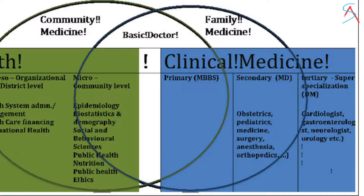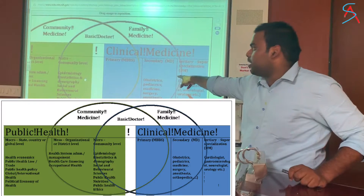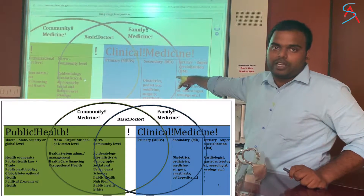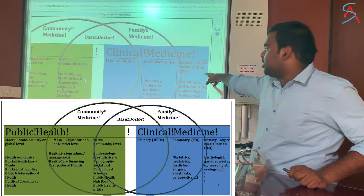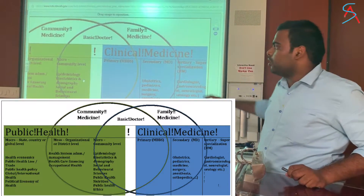We basically know that in medicine, we have three levels of care. One is primary, secondary, and tertiary. Primary is MBBS level, after that we gain secondary, and then the tertiary is the super speciality.